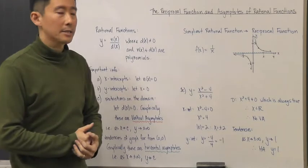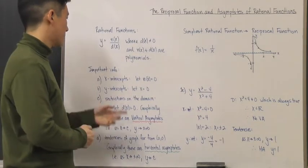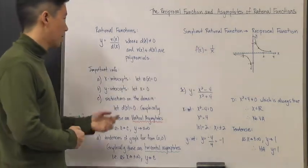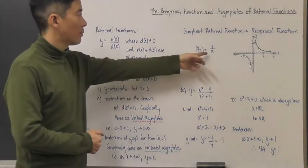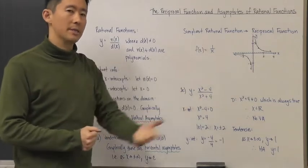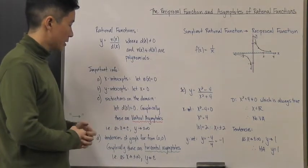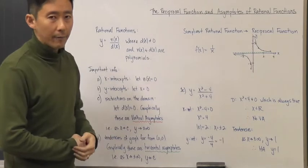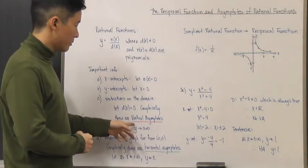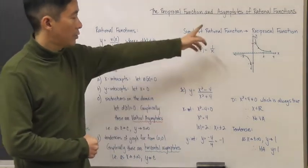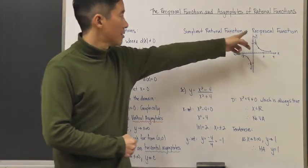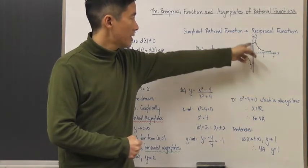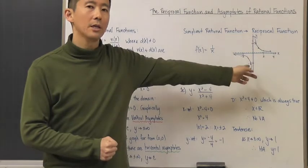The simplest rational function is the reciprocal function: f(x) = 1/x. For the x-intercept, n(x) = 1 is never zero, so it never crosses the x-axis. For the y-intercept, we can't let x equal zero because that gives 1/0, which is impossible. For domain restrictions, d(x) = x, so x = 0 is a vertical asymptote, shown as a dotted red line — the function cannot cross or touch it.